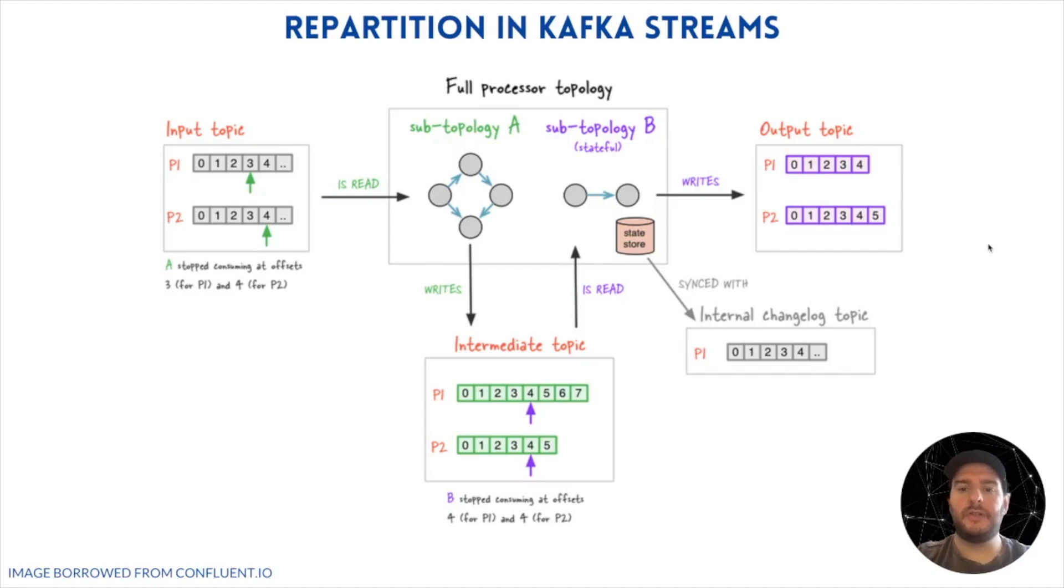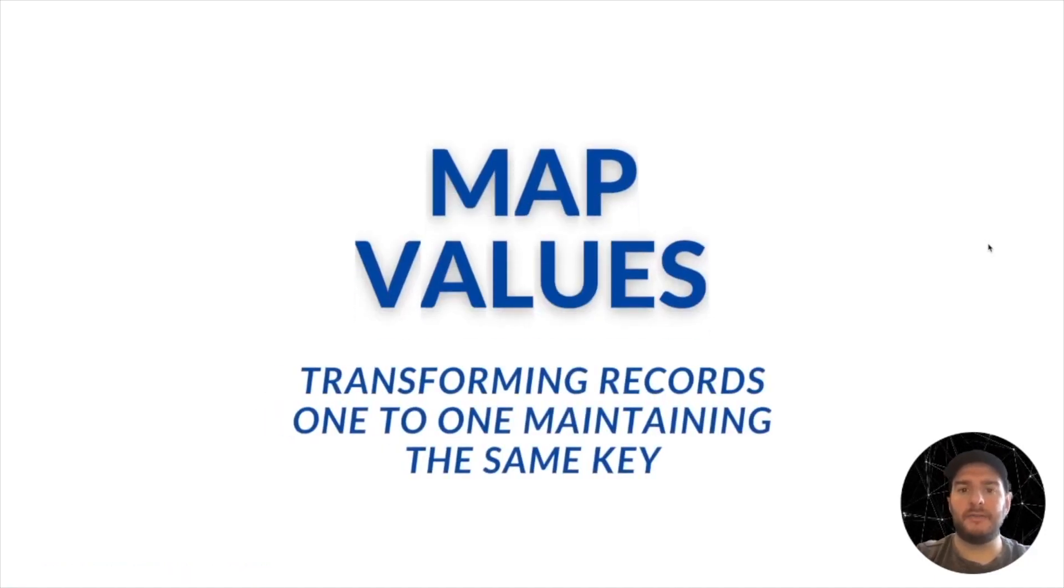Because this operation incurs in two input and output tasks, that's why we avoid it in our tutorials, and we instead use map values. This is a very similar operation, but instead of allowing you to transform the full record, it only allows you to transform the values of the record, keeping the key intact. This avoids repartitioning.